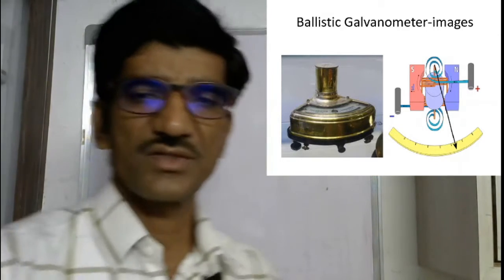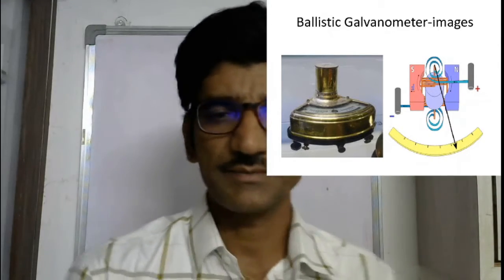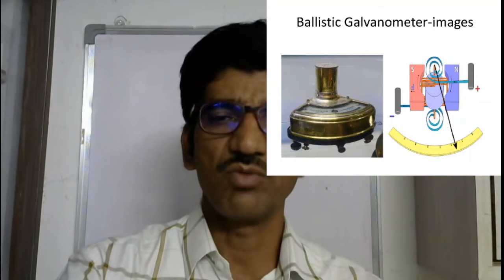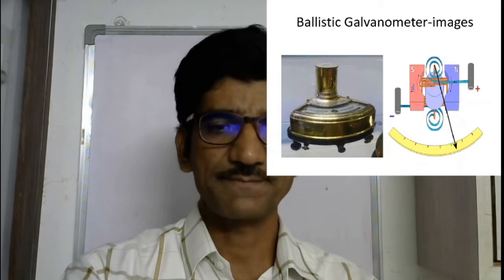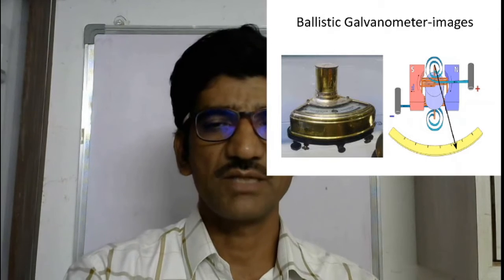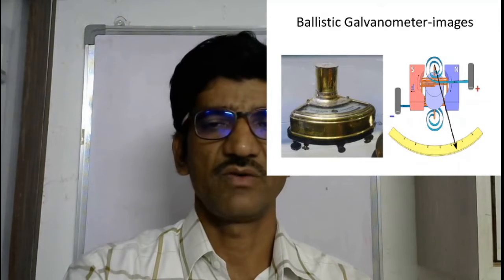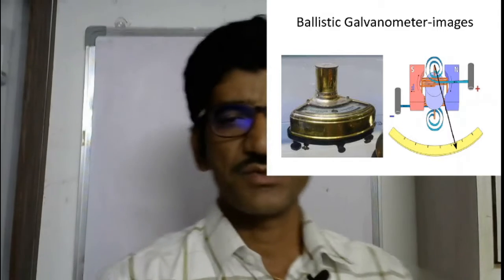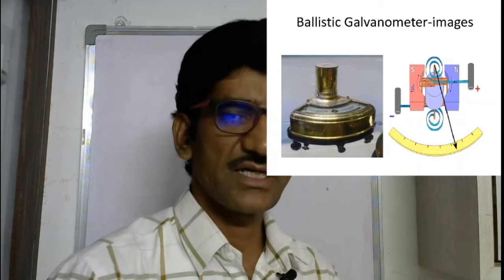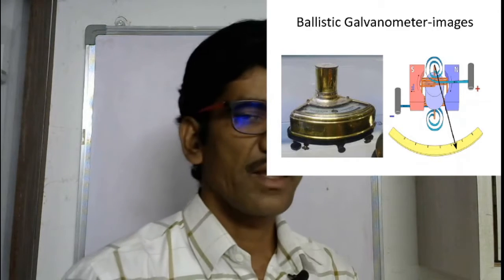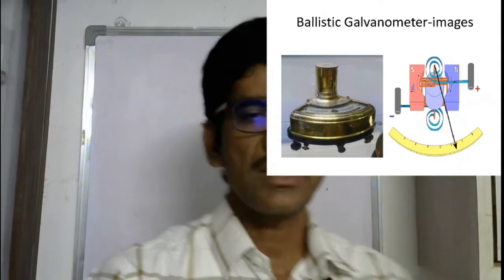You can see here on the slide the image of the ballistic galvanometer. Today, we will discuss the construction and working of the ballistic galvanometer. You are already familiar with the moving coil galvanometer. The ballistic galvanometer is also a moving coil type. You know how you may use the moving coil galvanometer for measuring current and voltage — you may convert an ordinary galvanometer into a voltmeter or ammeter.